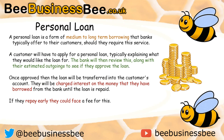Another form of borrowing is a personal loan, which tends to be seen as a medium to long-term example of borrowing that banks typically offer to customers. A customer will apply by visiting the branch, completing an application form, and the bank will review this along with their estimated outgoings to see if they approve the loan. Once approved, the money is transferred into the customer's account and the customer is charged interest until the loan is repaid. If you repay the loan quicker than required, you will be charged an early repayment fee.